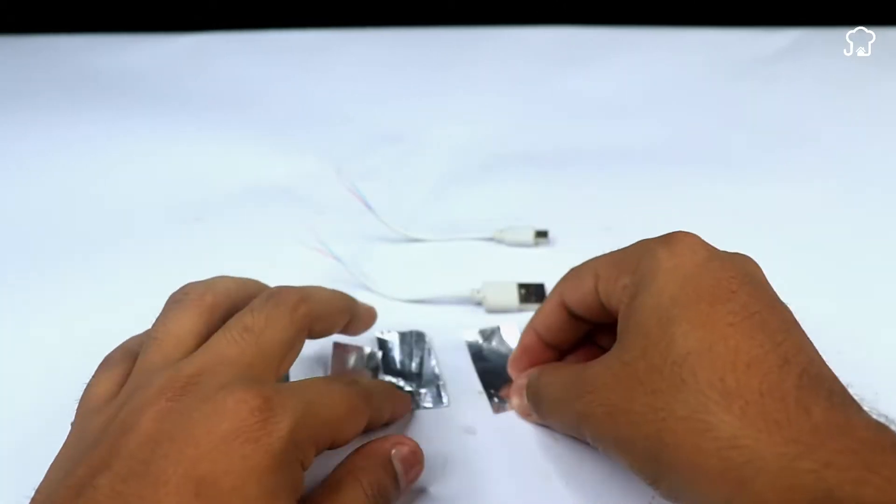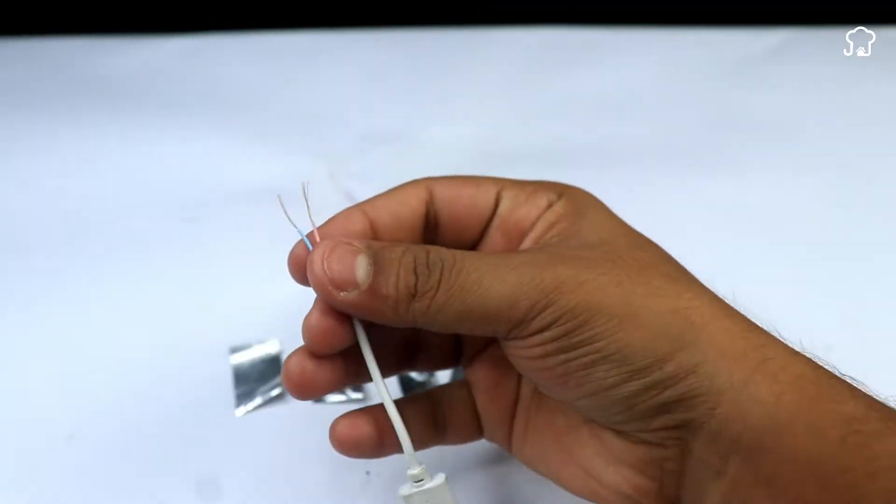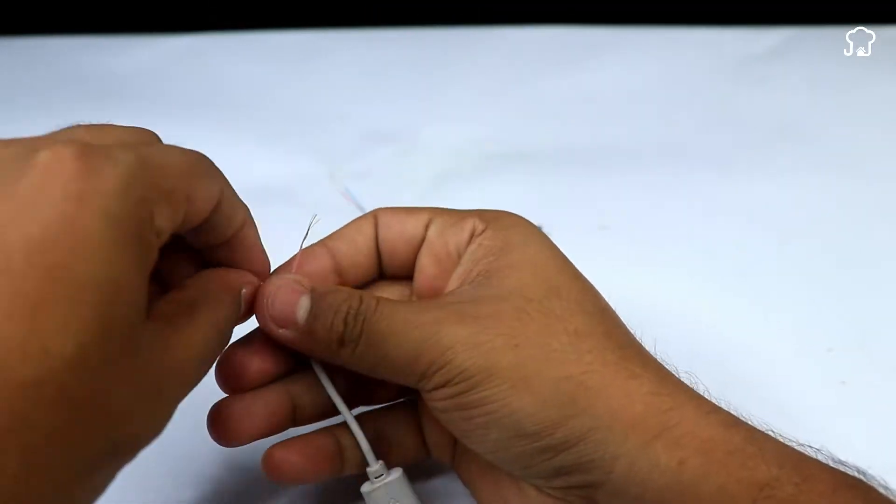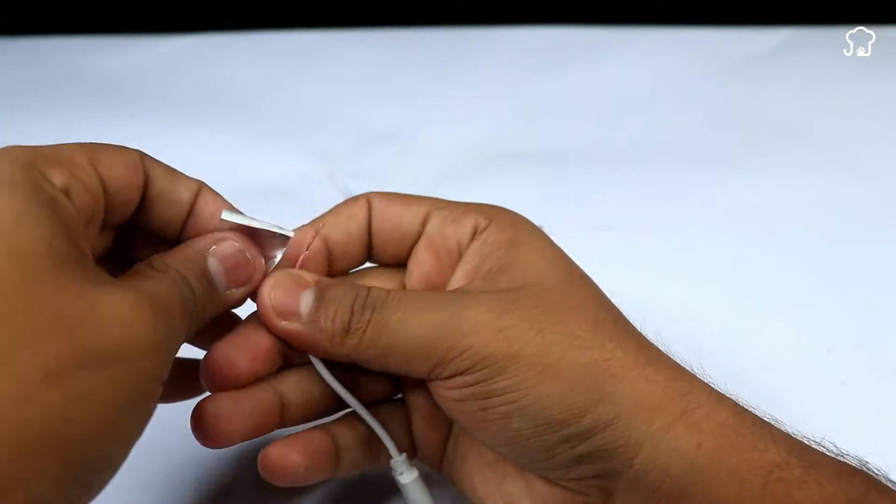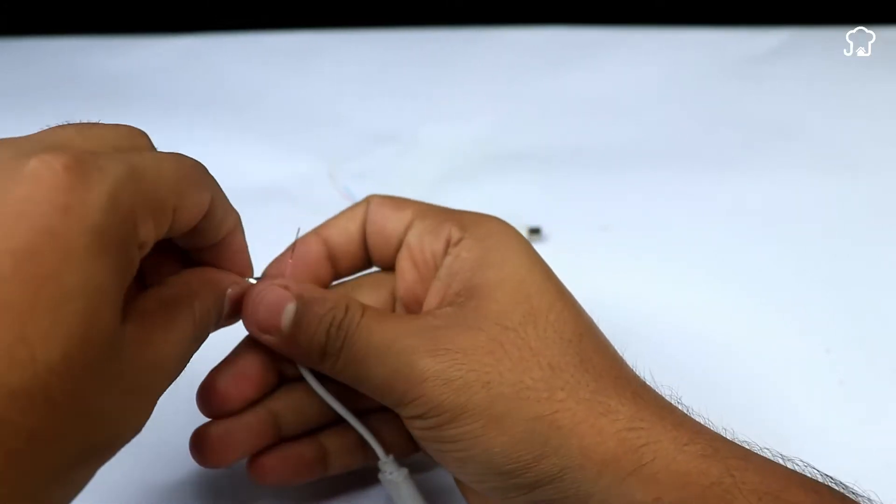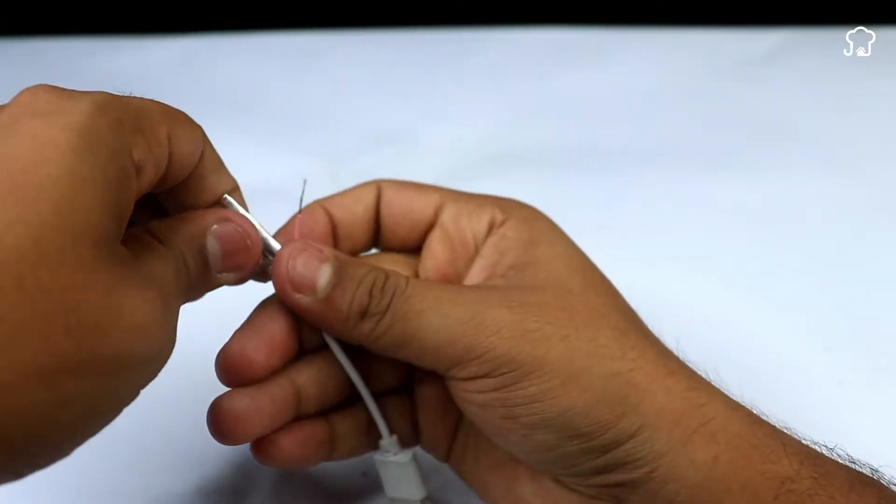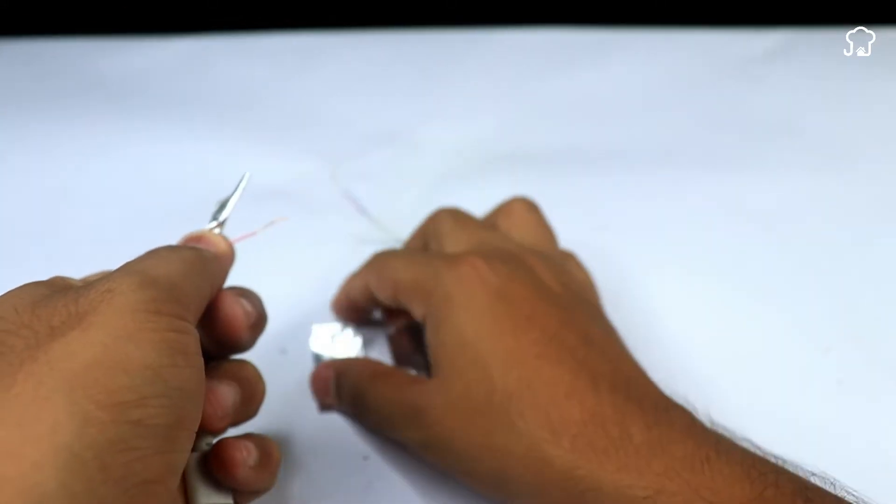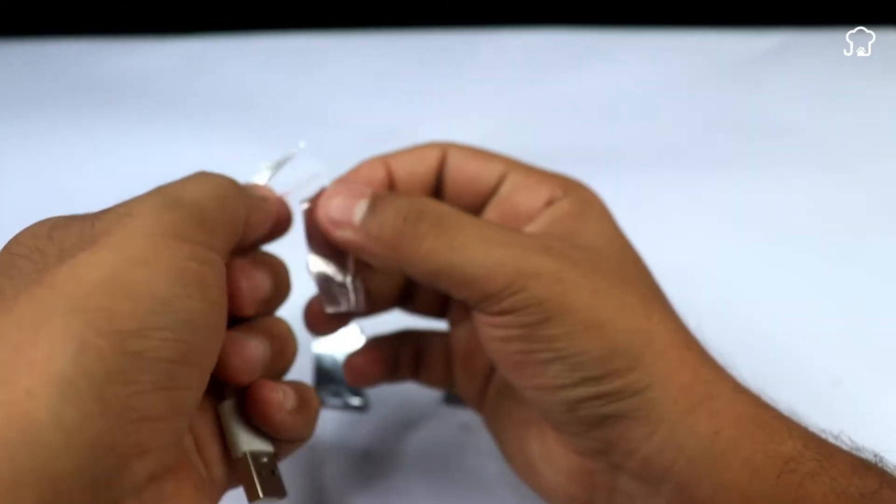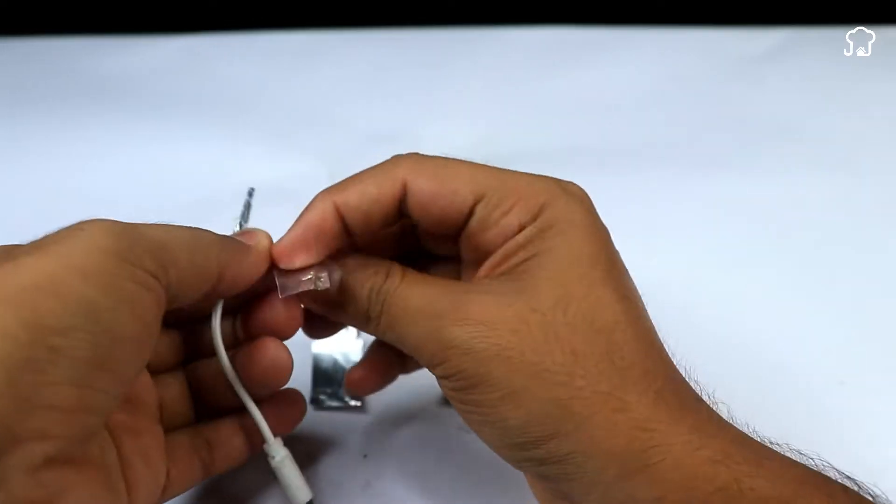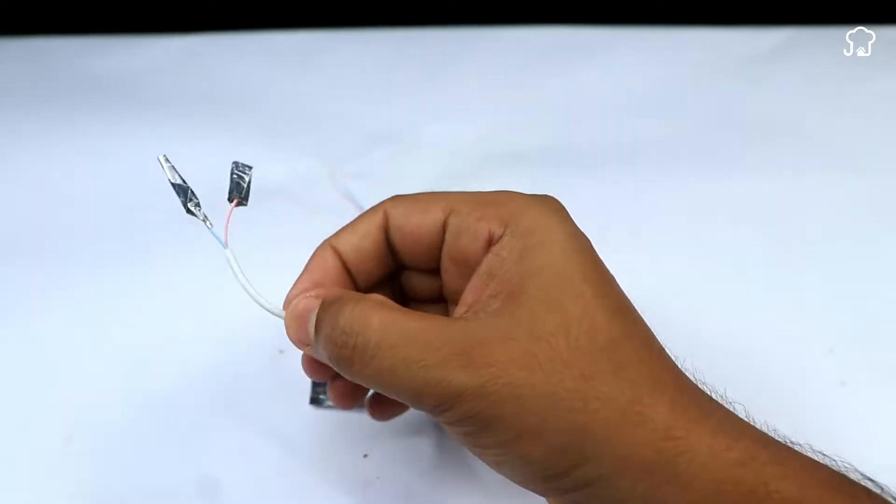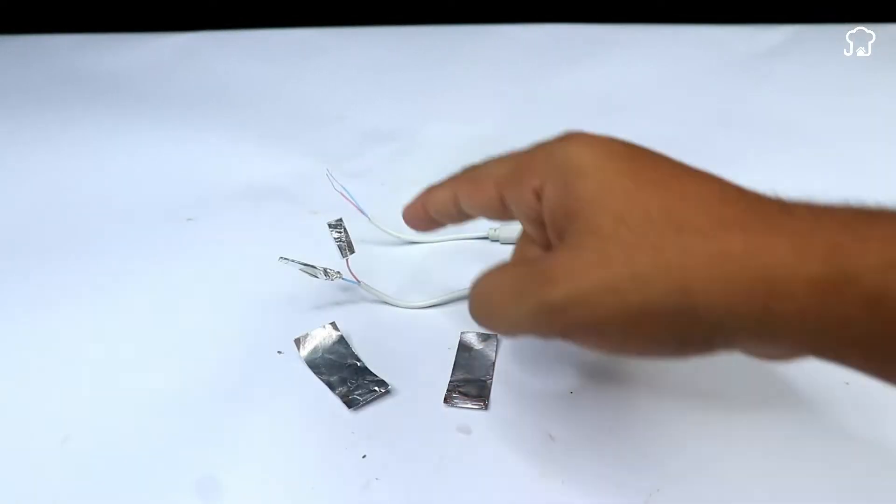To improve conductivity, take copper wire and wrap it around each of the aluminum coated wires.